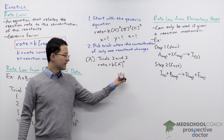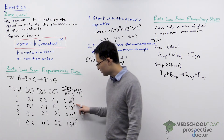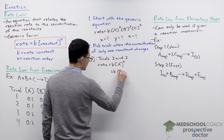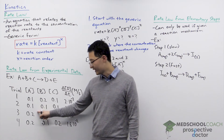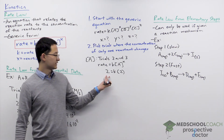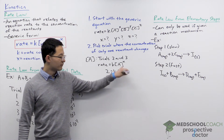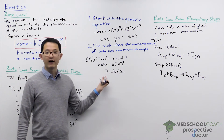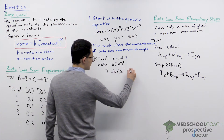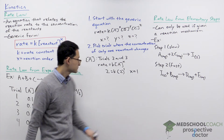From trial two to three, we doubled the concentration of A, and the reaction rate also doubled. So the question is: two to what power gives us two? The answer is one. That tells us our reaction is first order with respect to A — the reaction order is one.